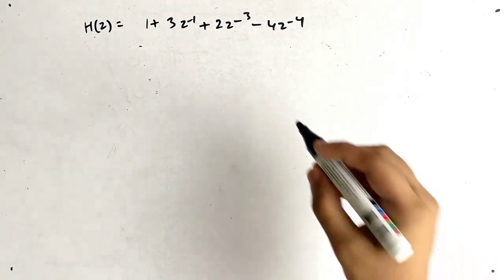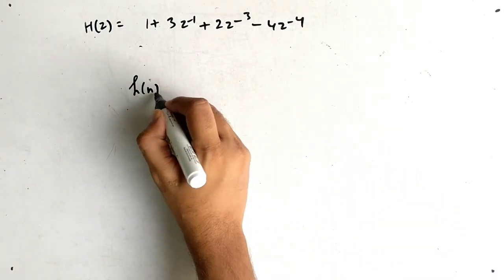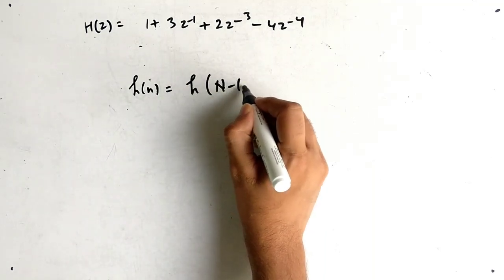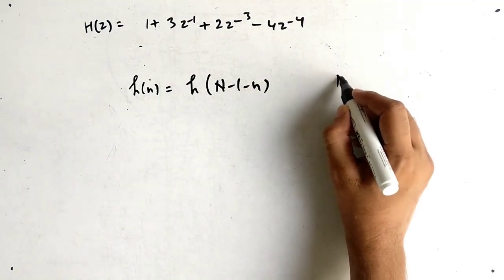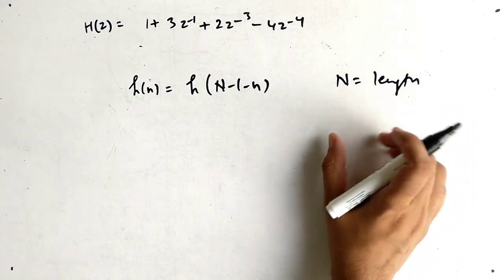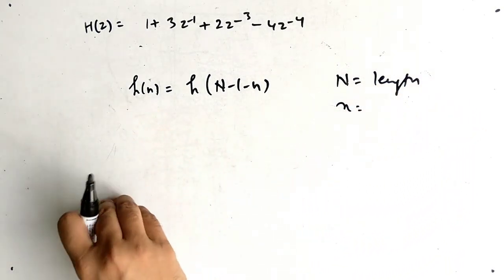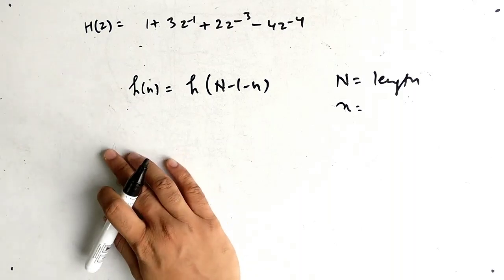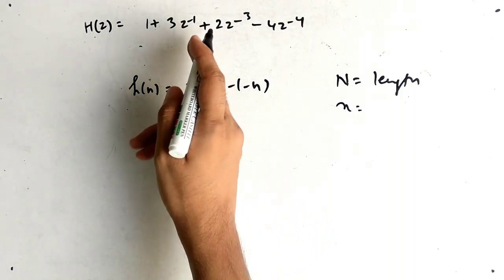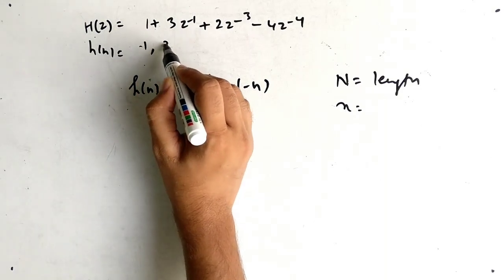Now let's talk about linear phase. The condition for linear phase is h(n) = h(N−1−n), where capital N is the length of the sequence, and small n is the index at which you want to find the amplitude.